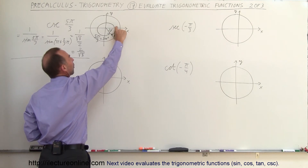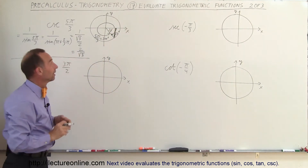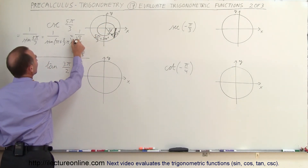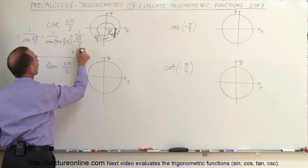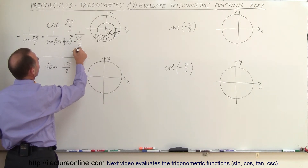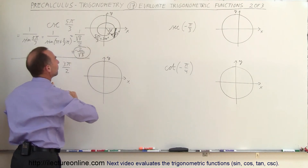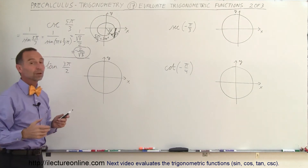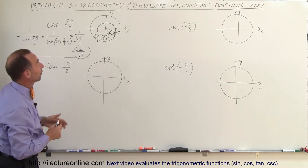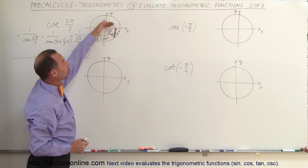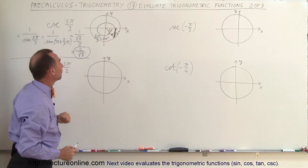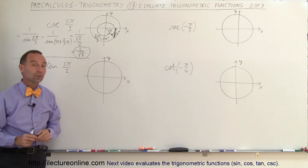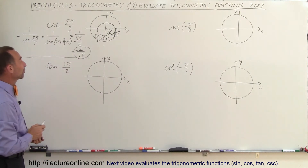Notice we're looking for the y-value here, and the y-value is negative — I forgot my negative sign, so I need to add a negative here. That is a negative value because it's below the x-axis. So the sine is the negative square root of 3 over 2, because it's in the fourth quadrant. Then we take the inverse because it's 1 over the sine, giving us negative 2 divided by the square root of 3.